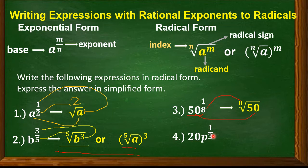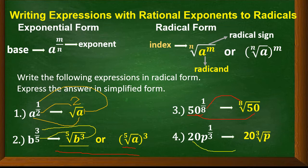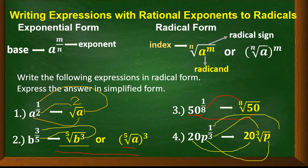Another example: 20p to the power of one third. Take note that here, only the variable p is being raised to the power of one third. So 20 will be outside the radical sign, giving us 20 times the cube root of p. The denominator 3 is the index, and since the exponent of p is 1, we do not write it. The equivalent is 20 cube root of p.